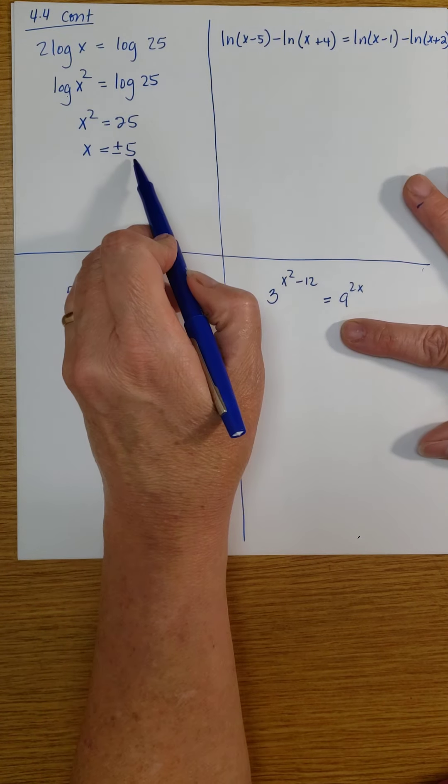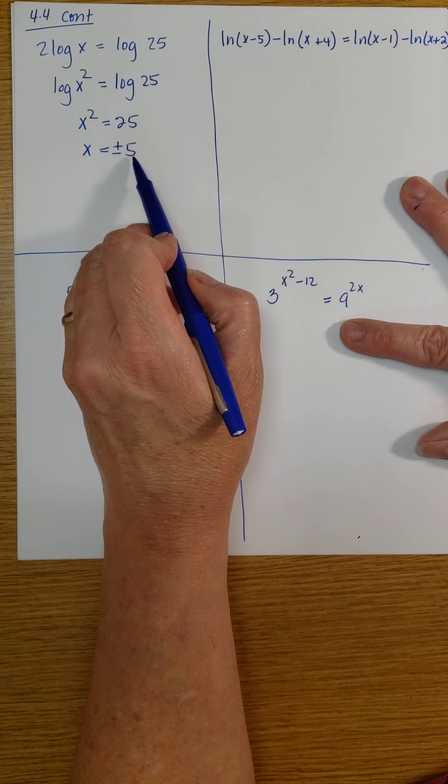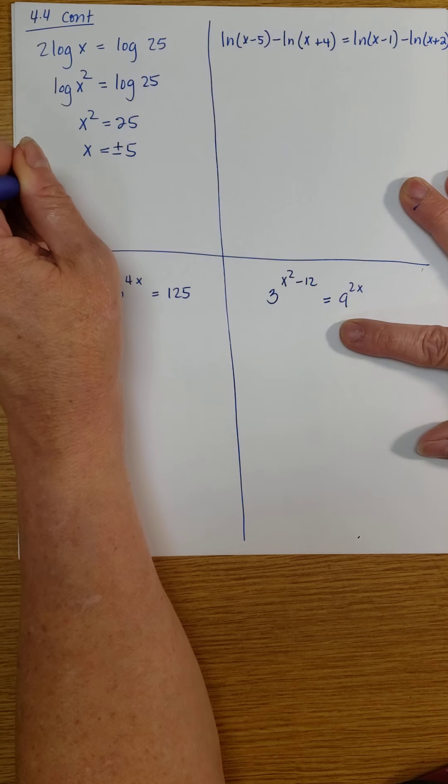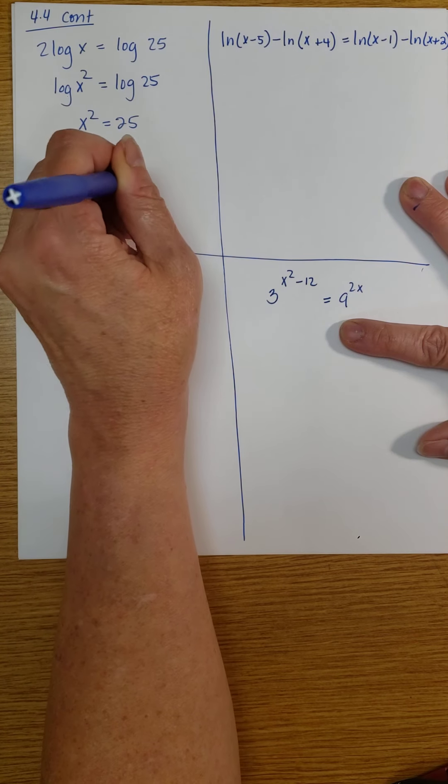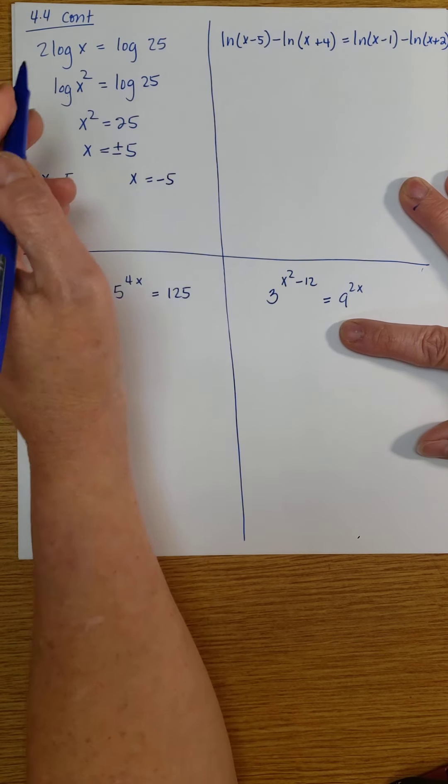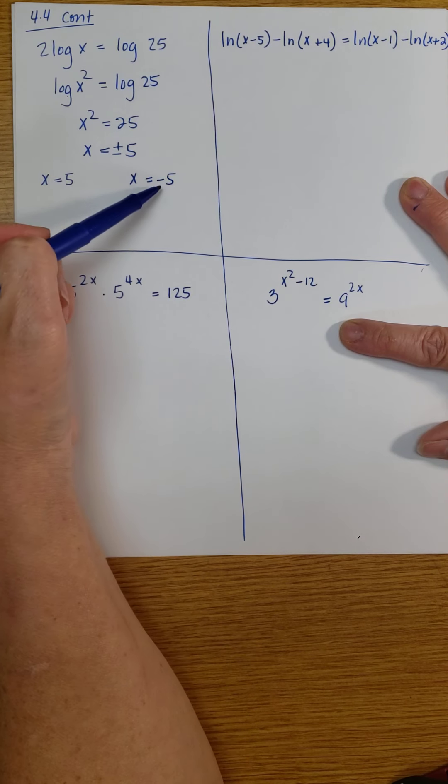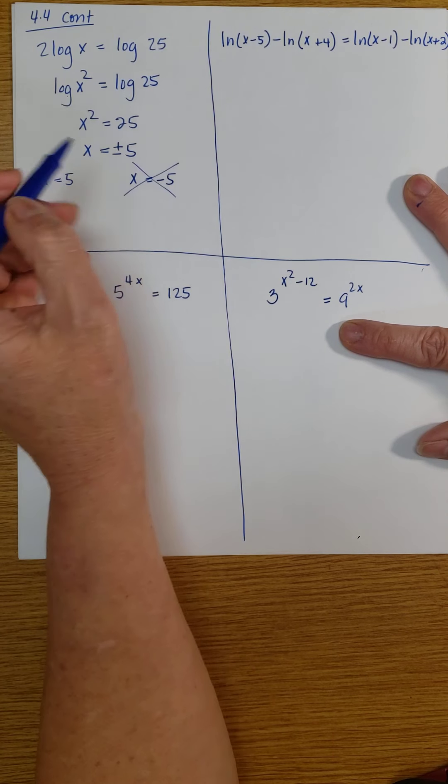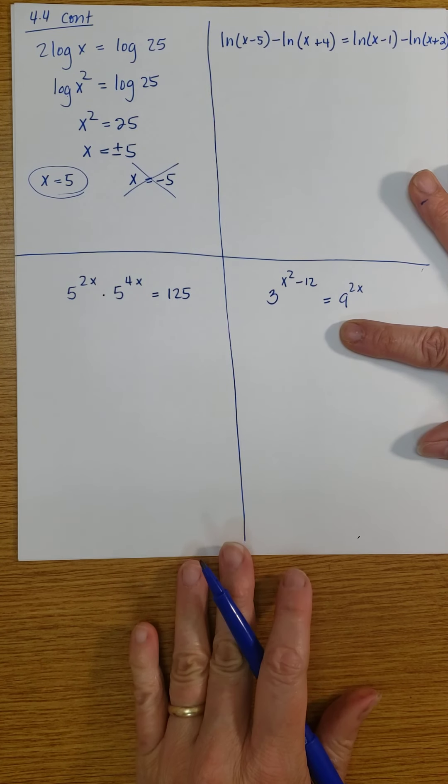And substituting this back in, I have to be careful again with the negatives. Notice that I have two solutions: one is x equal 5 and the other is x equal negative 5. I can plug 5 in here, but if I try to plug in that negative 5, I can't take the log of a negative number. So this one is out and this is the correct solution.